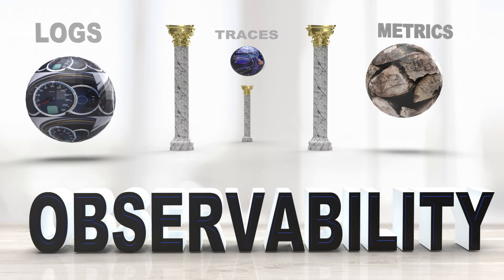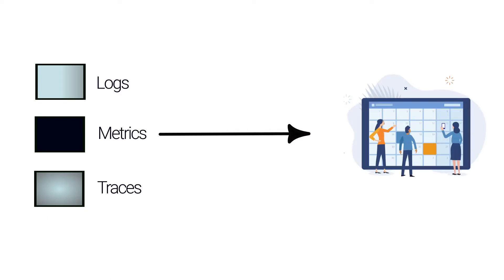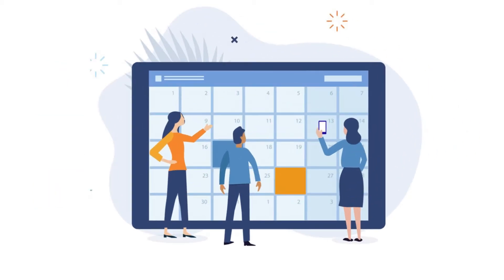Distributed tracing is often mentioned under the umbrella of observability. Observability is a combination of logs, metrics, and traces that can be used together to gain insights into distributed applications. But it's not just about having logs, metrics, and traces working in silo. You need to be able to view all of these types of telemetry in one single pane of glass and to be able to switch between views as needed. This type of practice is better suited for today's distributed systems that can fail in very unpredictable ways.